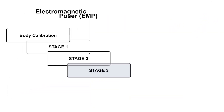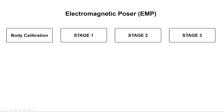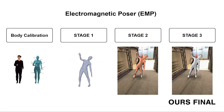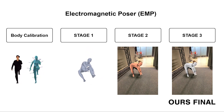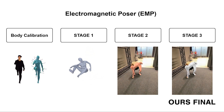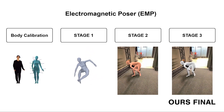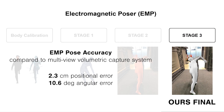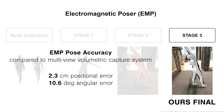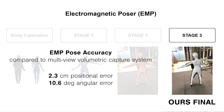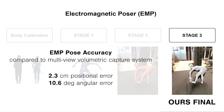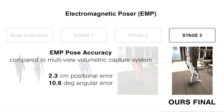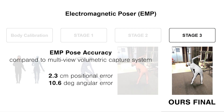With this multi-stage design, our final results display high quality both for 3D pose and pose-to-image alignment. Our evaluations have revealed that EMP achieves 2.3 cm positional and 10.6 degrees angular error compared to ground truth recorded with a multi-view capture studio.